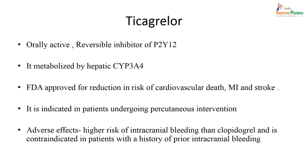Another purinergic drug is ticagrelor. It is a reversible inhibitor of P2Y12 and is metabolized by cytochrome CYP3A4 in the liver. It has been approved by the US FDA for cardiovascular disease — acute coronary syndrome, MI, and stroke — and is indicated in patients undergoing percutaneous intervention. Similar adverse effects are seen: high risk of intracranial bleeding. It is contraindicated in patients with a history of intracranial bleeding.